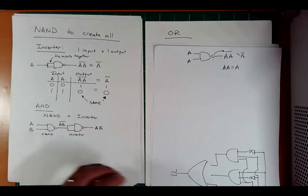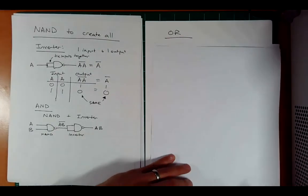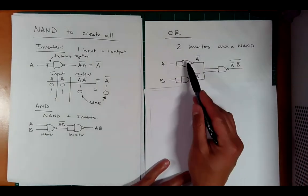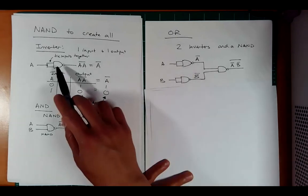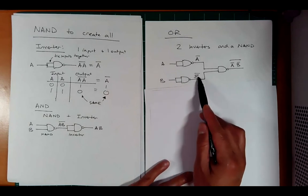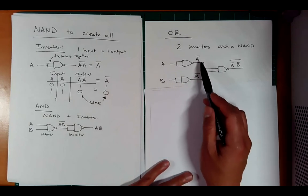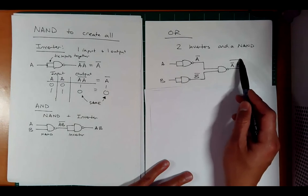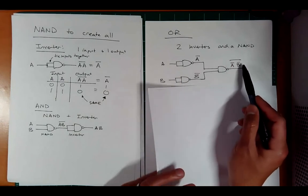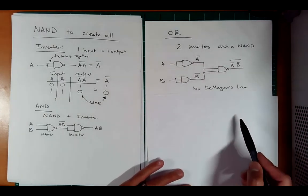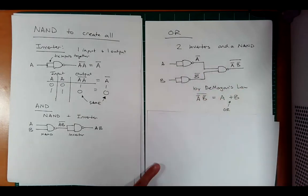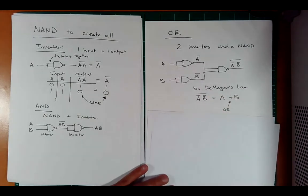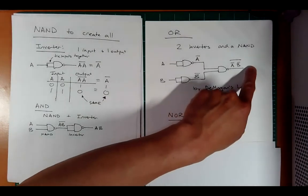The OR gate is admittedly a bit complicated. You take two inverters and a NAND. The first inverter gives A-bar, the second gives B-bar. NAND-ing those two gives A-bar NAND B-bar, which equals the inversion of (A-bar times B-bar). By DeMorgan's Laws, that is exactly an OR. So three NAND gates implement an OR gate. For a NOR gate, just add an inverter on the end.